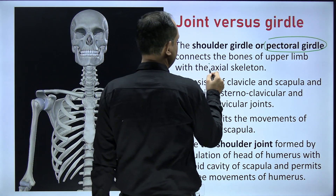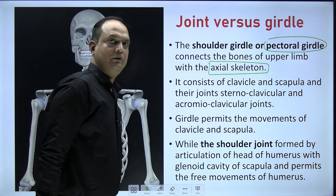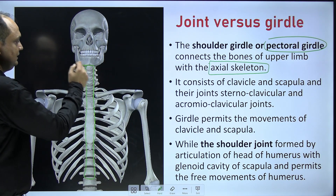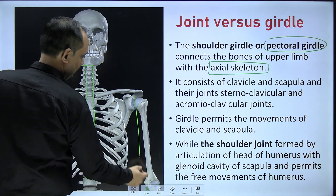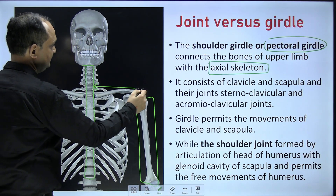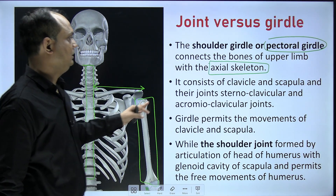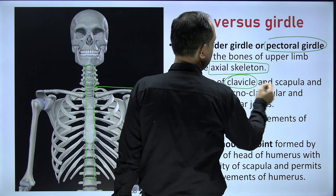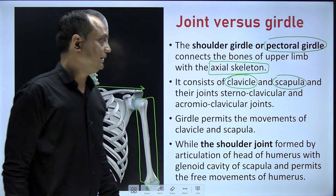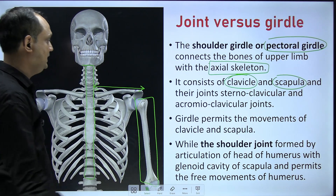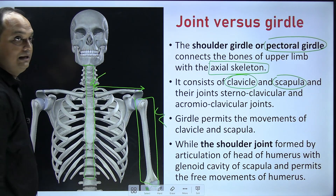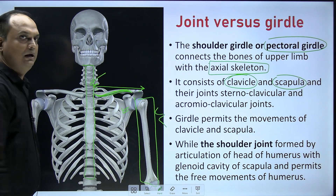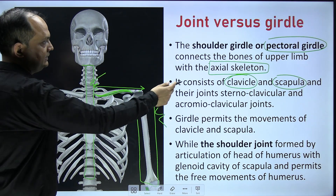The important word here is axial skeleton. In this image you can see that the axial skeleton means the midline area, and this is your upper limb. The connection between the two is your pectoral girdle. The bones that consist of this area are clavicle and scapula — both are responsible for connecting the upper limb with the midline axial skeleton.